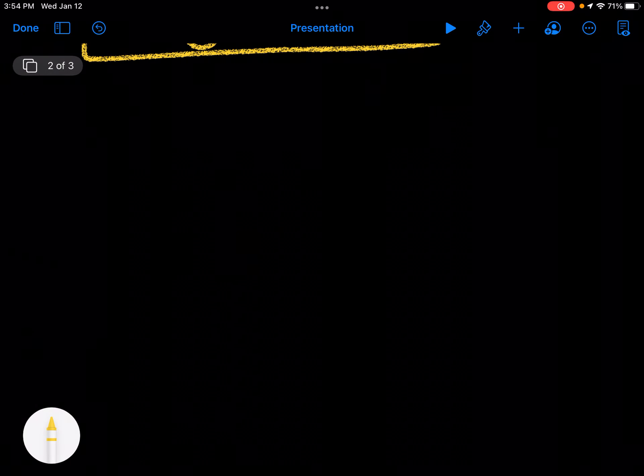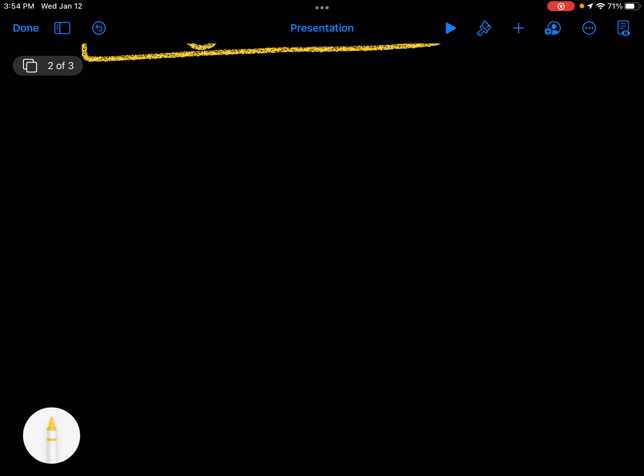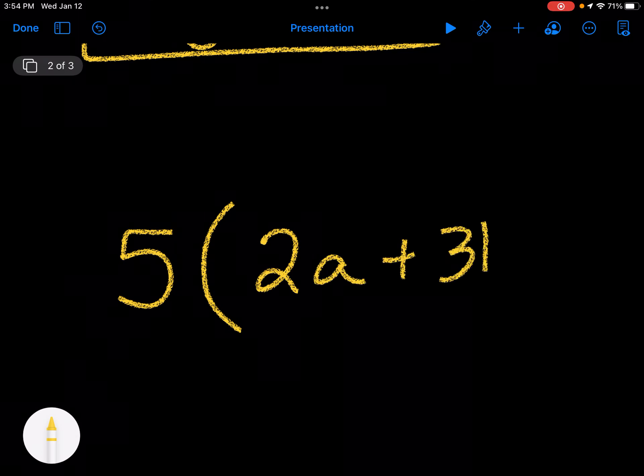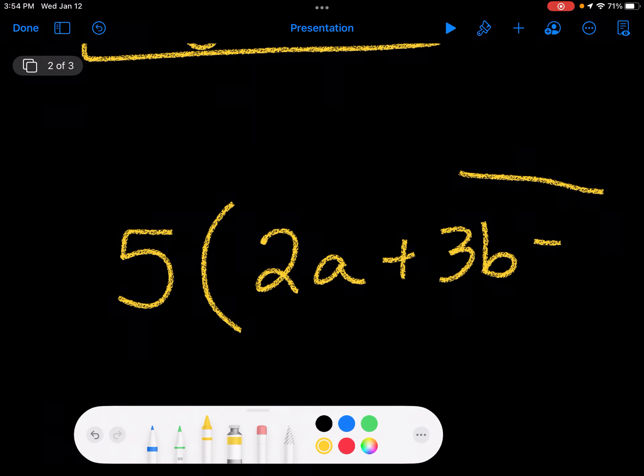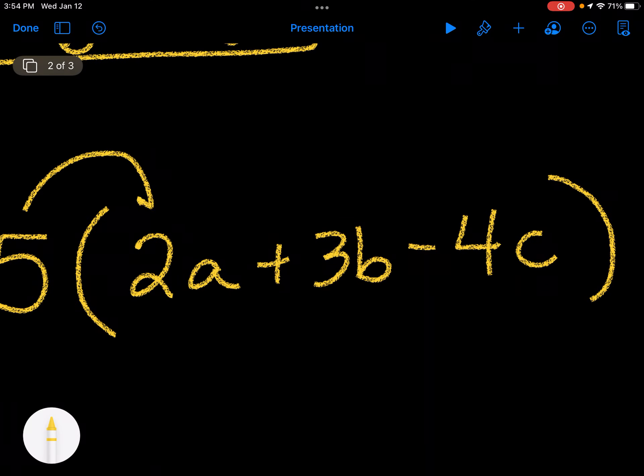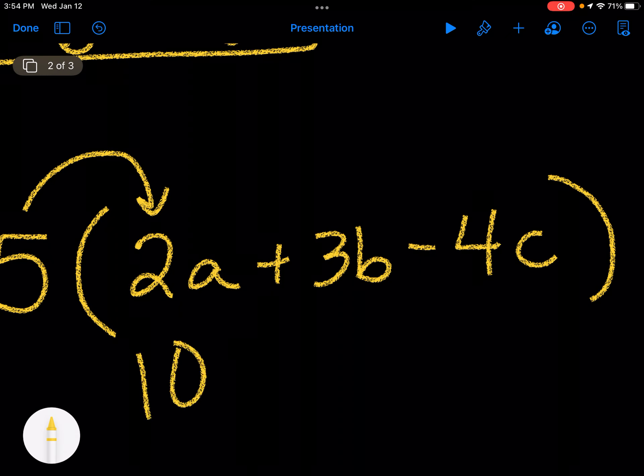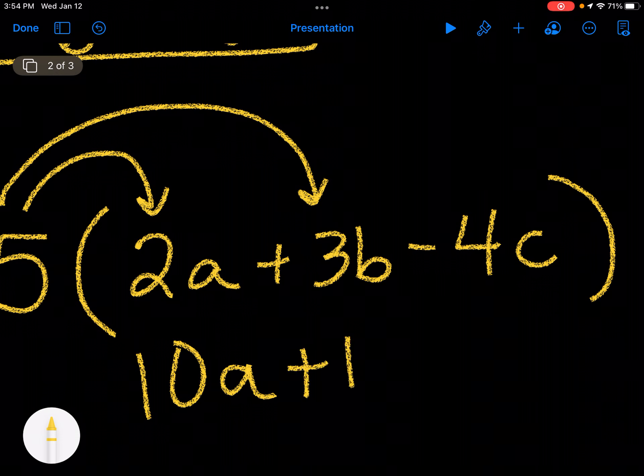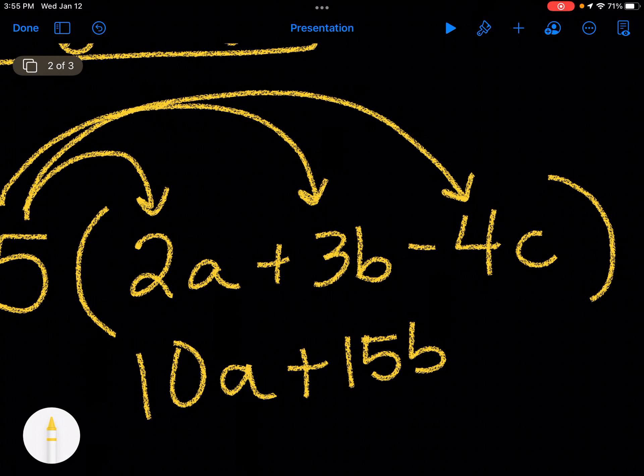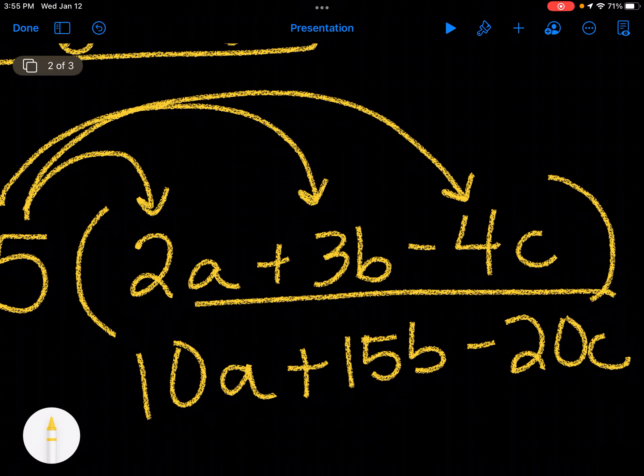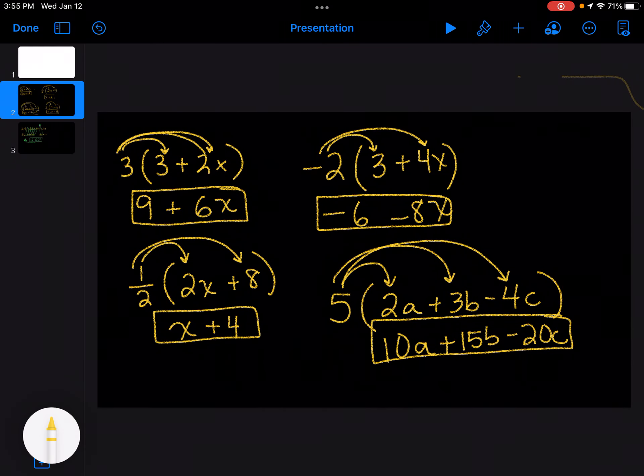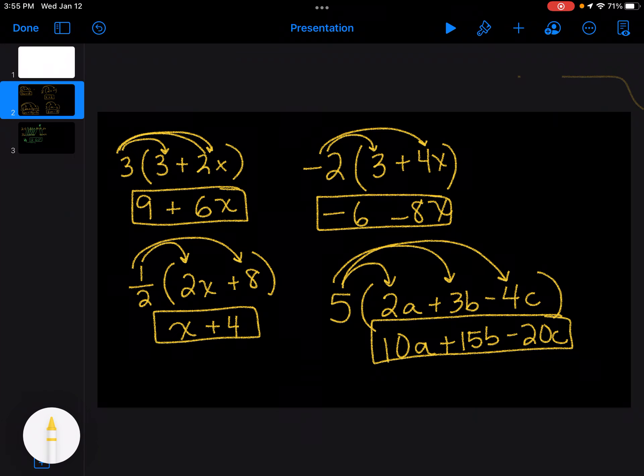Let's try one more. Let's say I have 5 times 2a plus 3b minus 4c. So I'm going to take the 5, I'm going to multiply it by the 2a, so I get 10a, 5 times 3b, so that's 15b. And then the 5 times a negative 4c, so that's going to be a negative 20c. So a, b, and c, they're not the same letters, so I can't combine them. So when I look at my distributive property, I take the number on the outside, and I multiply them by all the numbers on the inside.